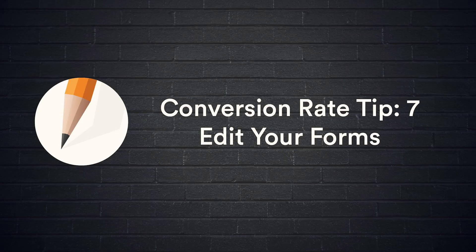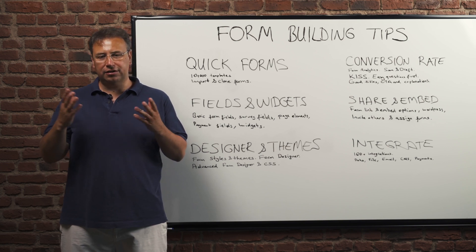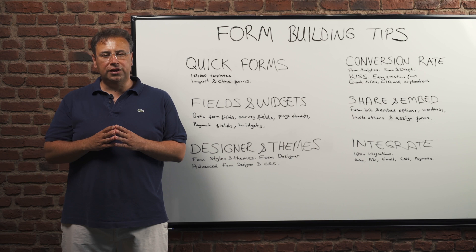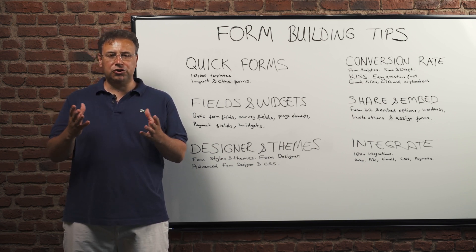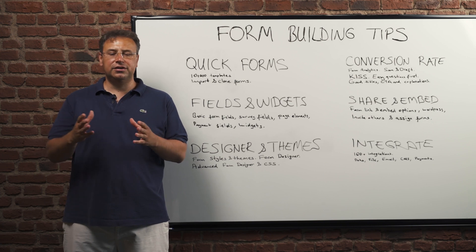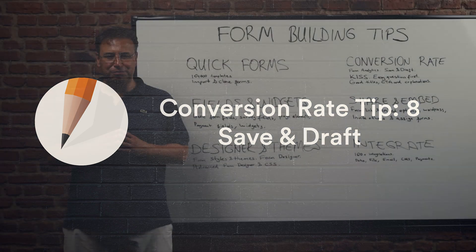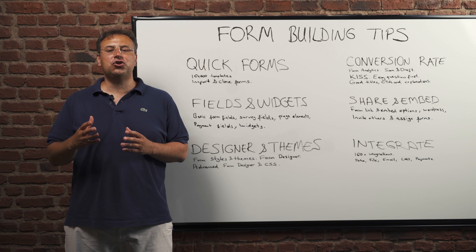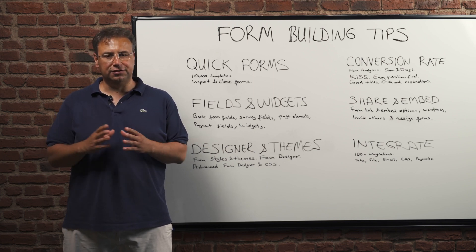Number seven: edit your forms. Review your forms for typos and consistency. It's always a good idea to get someone else to have a look at your forms. JotForm has a collaboration feature that allows others to edit your forms. Number eight: enable the save and draft feature on your form. If your forms are very long, this feature allows your users to save and continue later.